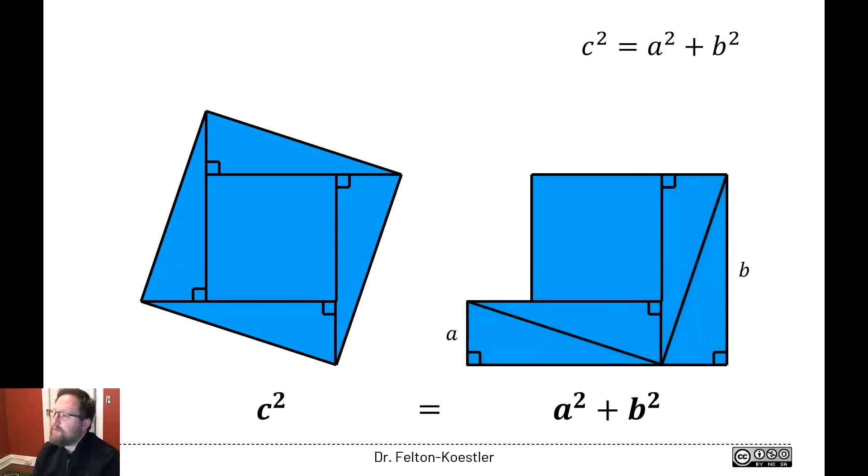So the area of the puzzle on the right is a squared plus b squared. But as a reminder the puzzles are made of the same pieces and they have the same overall area. So we get the formula that you all learned in school which is that c squared is the same as a squared plus b squared. They're just two different ways of saying the same amount of area.